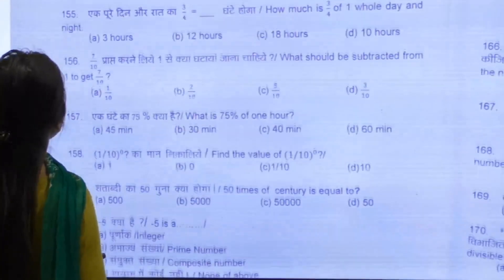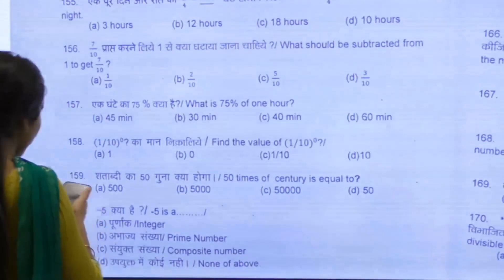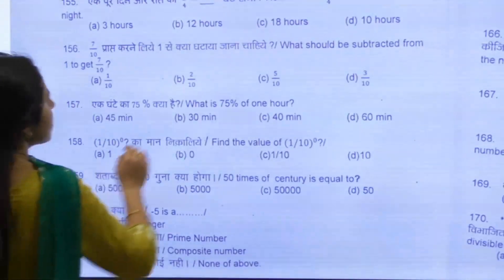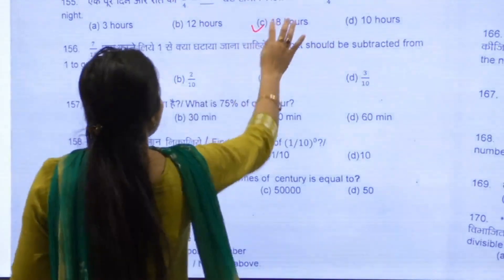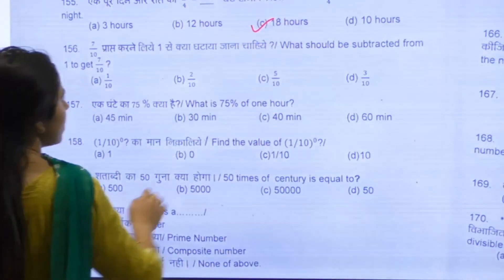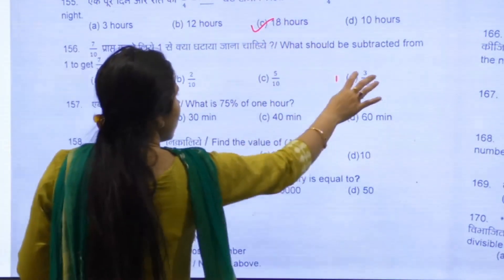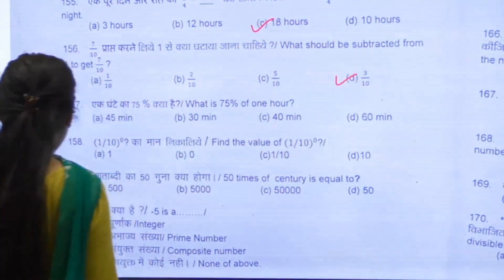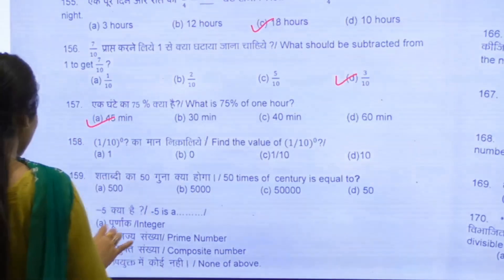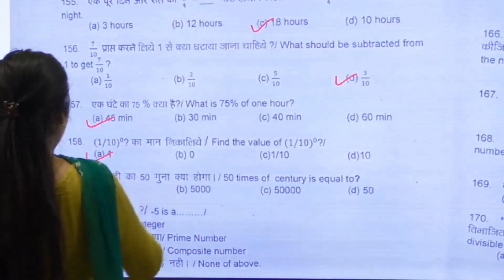Now, moving on to question number 155. 155 is E. 156 is D. 157 is A. 158 is A.